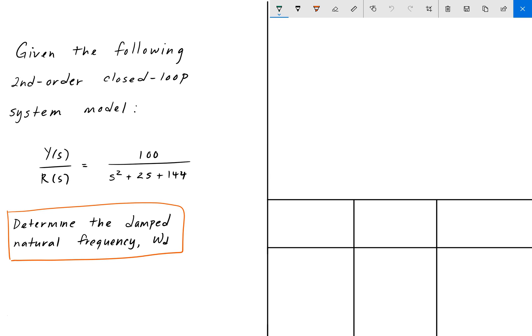Hey everyone, welcome back to Engineering Education. For this next problem we have a control systems problem and we're given the following second order closed loop system model. The transfer function Y divided by R is given by 100 divided by s squared plus 2s plus 144, where Y is the output of the system and R is the input of the system. We're asked to find the damped natural frequency omega d. So as always, pause the video, give it a shot, and we'll go over the answer in a bit.